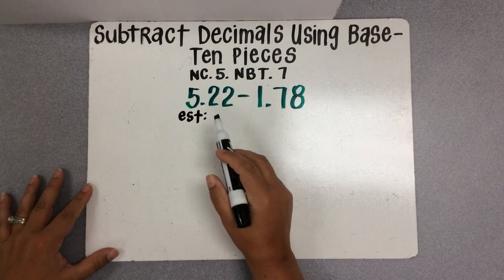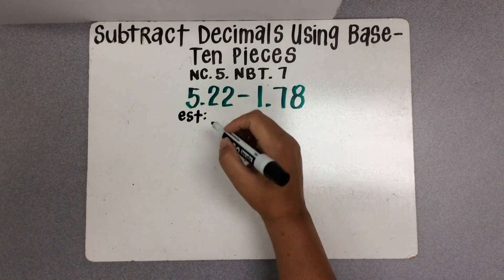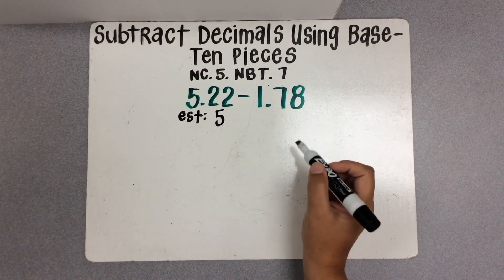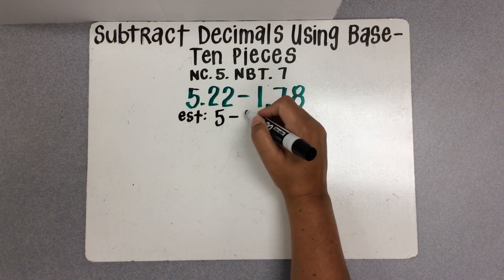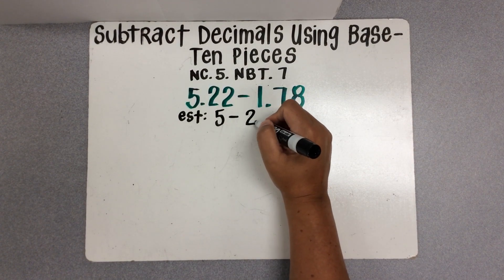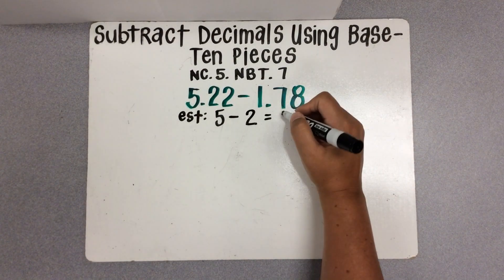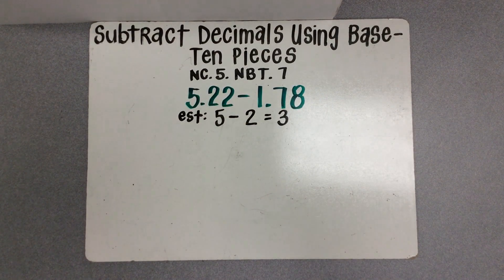I know that 5 and 22 hundredths is close to 5 wholes — it's just 22 hundredths more than that. And 1 and 78 hundredths is close to 2. And 5 minus 2 would be 3, so we know that our answer will be close to 3 wholes.